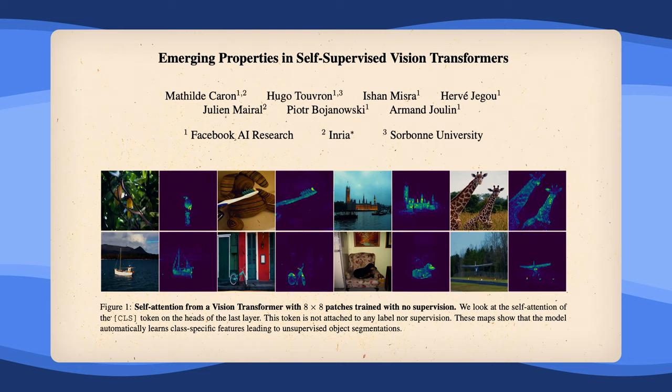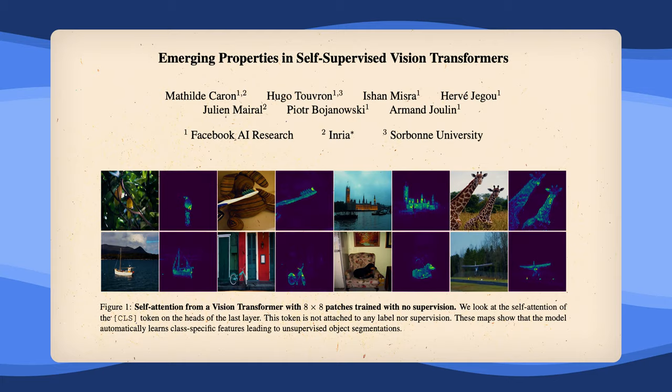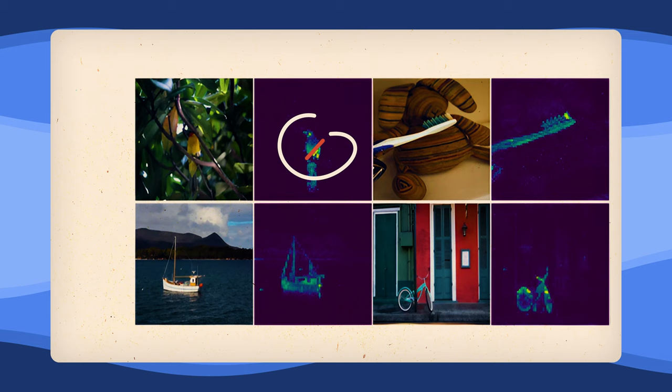When predicting the final representation of this image right here, the model pays the most attention to the bird. When doing so for this image right here, it pays attention to the boat and so on.